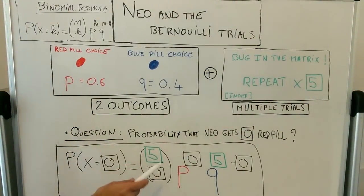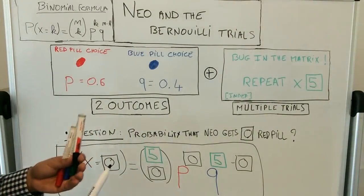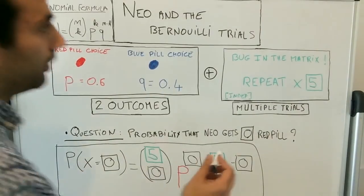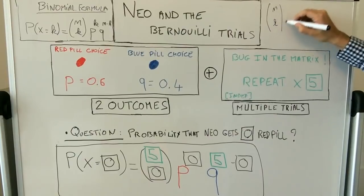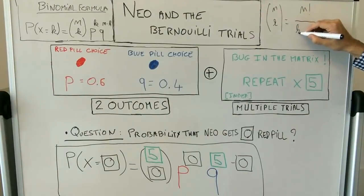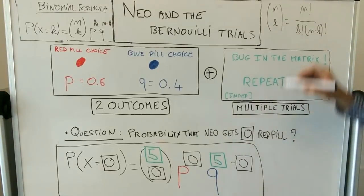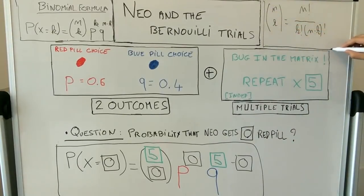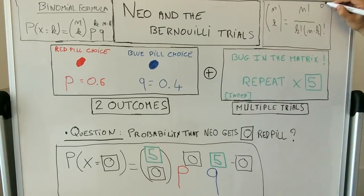We need the binomial coefficient formula: N choose K equals N factorial over K factorial times (N minus K) factorial. One sneaky but important convention: zero factorial is equal to one. It looks weird but it's a convention.